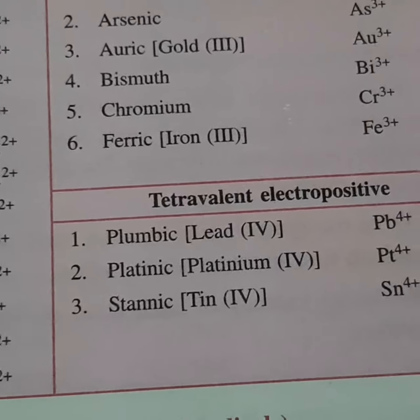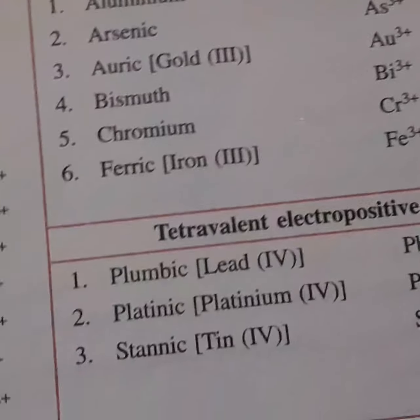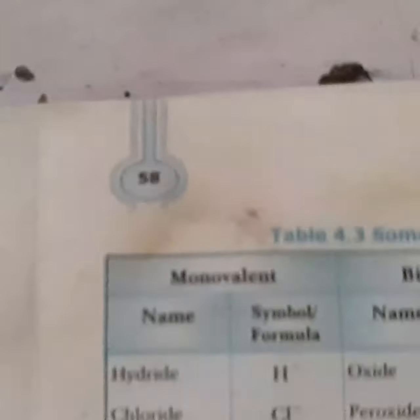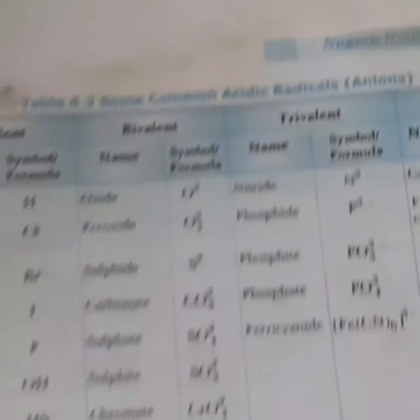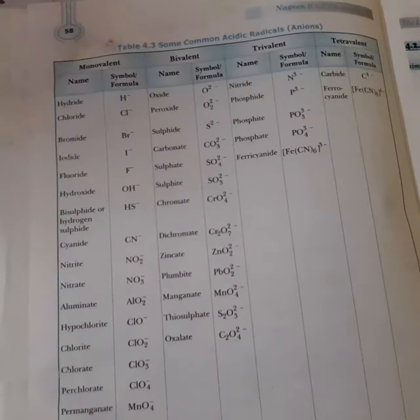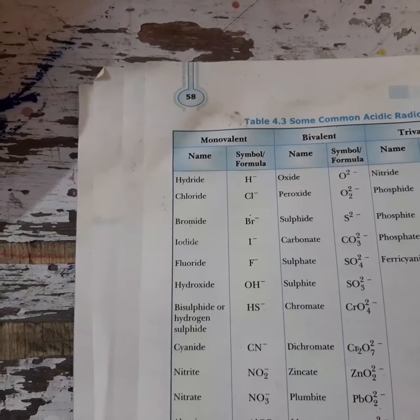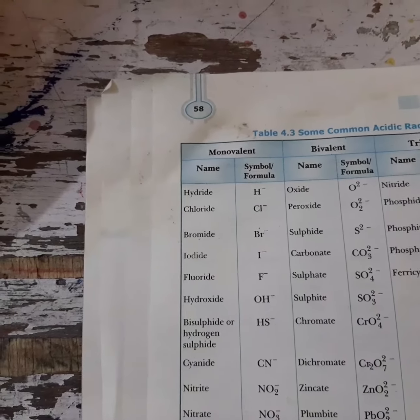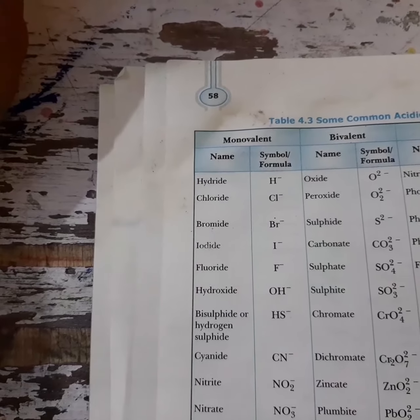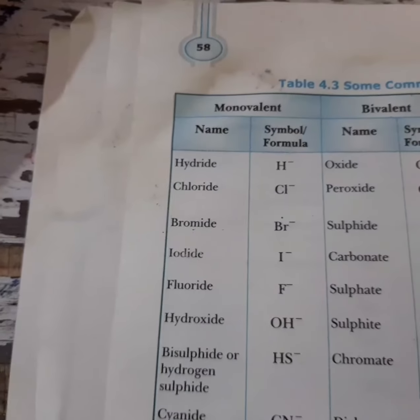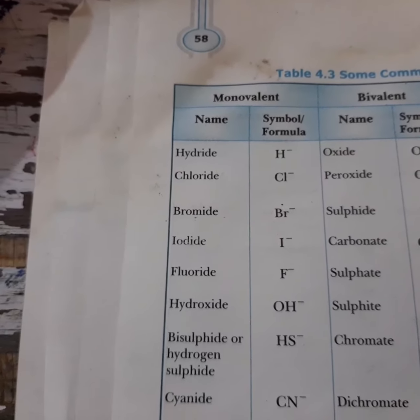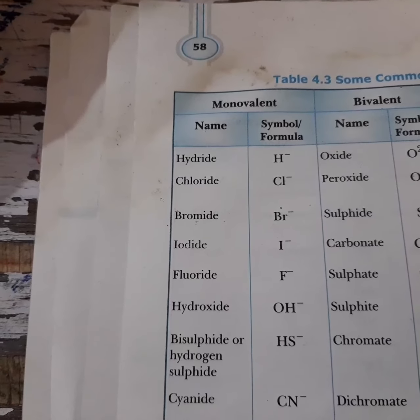You need to learn all of these positive radicals. Similarly, we have acidic radicals — also called anions — which generally carry a negative charge of minus one or minus two. For example, monovalent acidic radicals include: hydride H−, chloride Cl−, bromide Br−, iodide I−, fluoride F−.